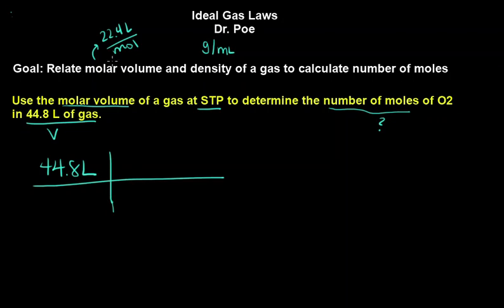And so because we know this, it's a conversion factor. So we can use that, 22.4 liters for every one mole. Works for any gas, O2, helium, whatever, hydrogen.